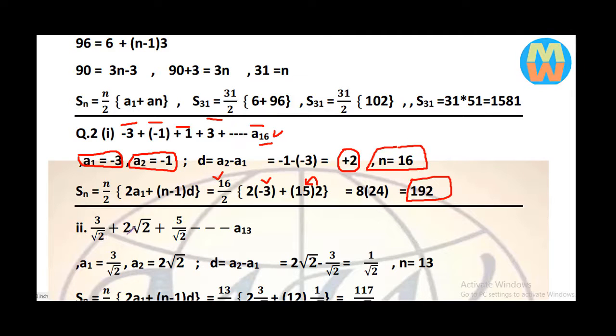Second problem: 3 over 2 square root plus 2 square root 2 plus 5 over 2 square root and so on up to a13. This means n is 13, and a1 is 3 over square root 2, and a2 is 2 square root 2.